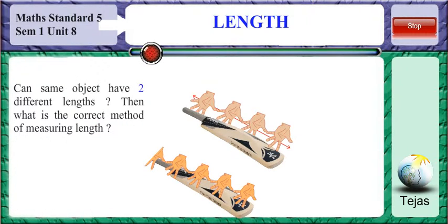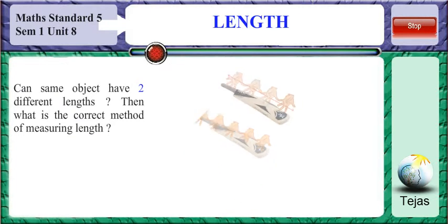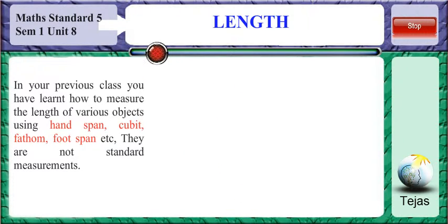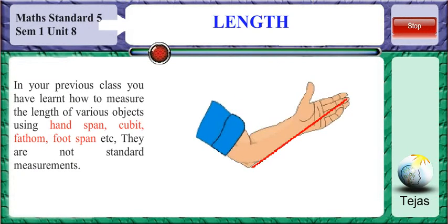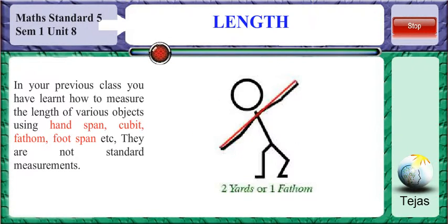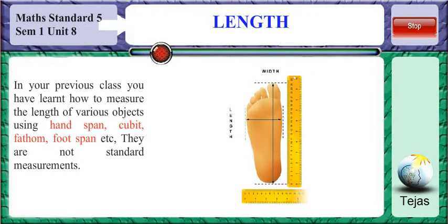Can the same object have two different lengths? No, that is not possible. Then what is the correct method of measuring length? You have learnt how to measure the length of various objects using hand span, cubit, fathom, foot span, etc.